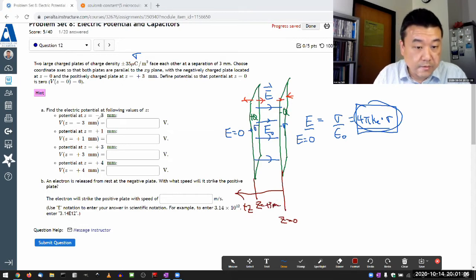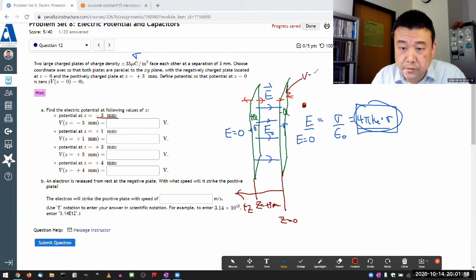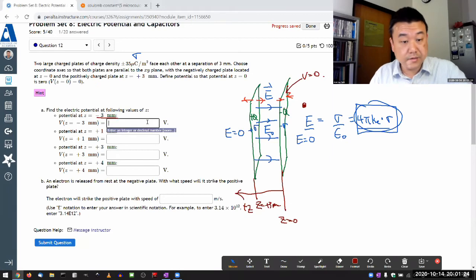So when it says z equals minus three millimeter, I'm looking at a point here. And we set the voltage of the negatively charged plate to be equal to zero. So for the very first part here, the simple answer here is zero volt.